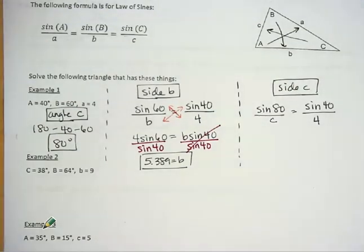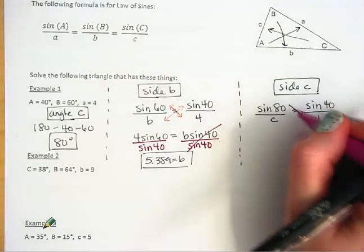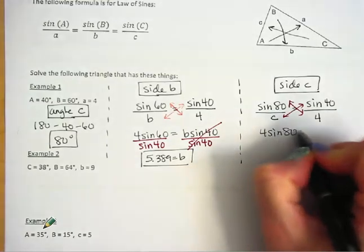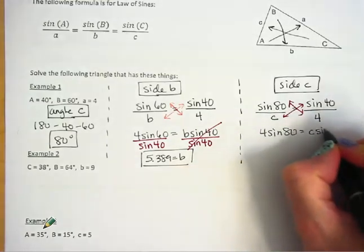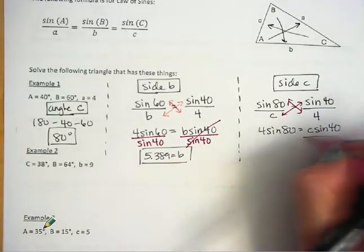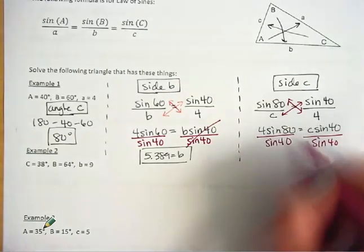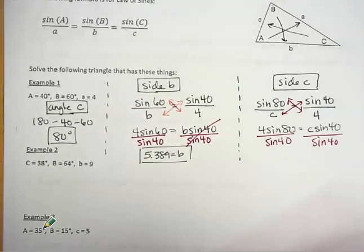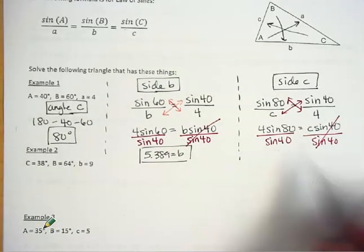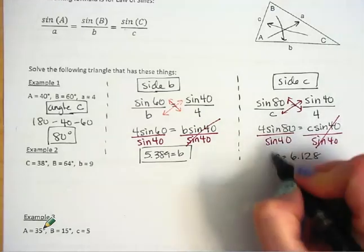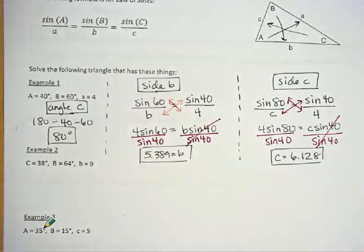So there's my setup. Multiplying across gives c equals four times sine 80 over sine 40. A little bit of calculator work gives 6.128. If you want to know why the cross-multiplication shortcut works for proportions, let me know in class and I'd be happy to go over it.